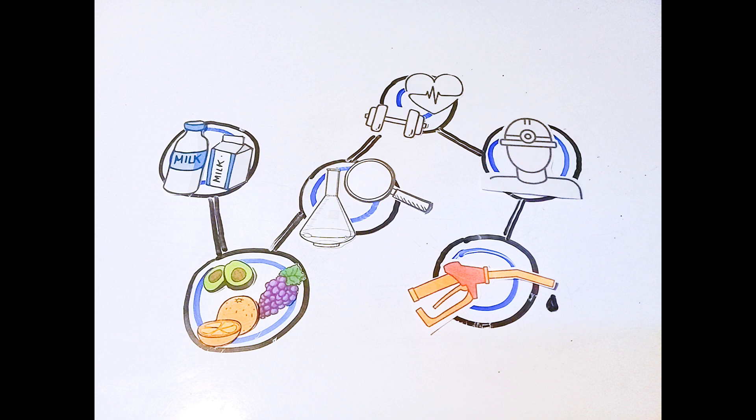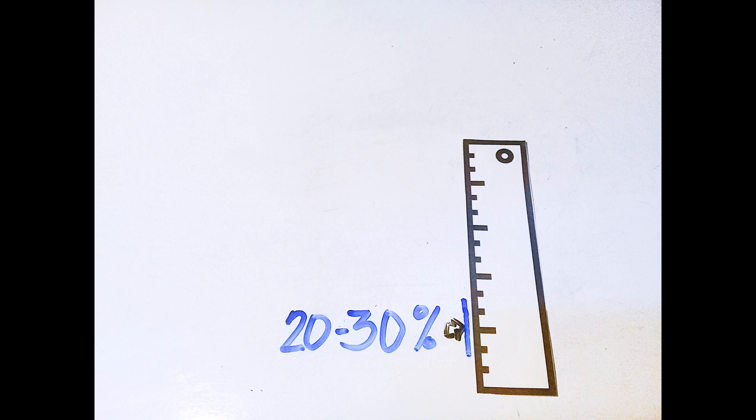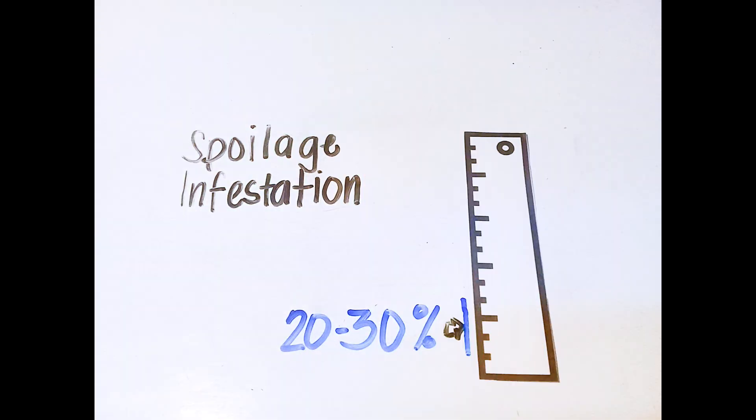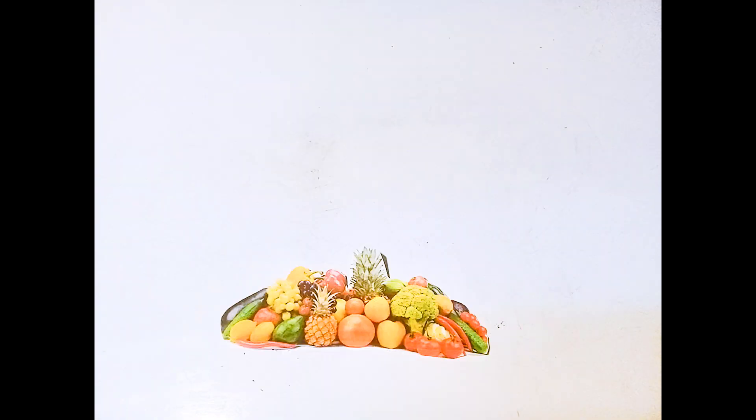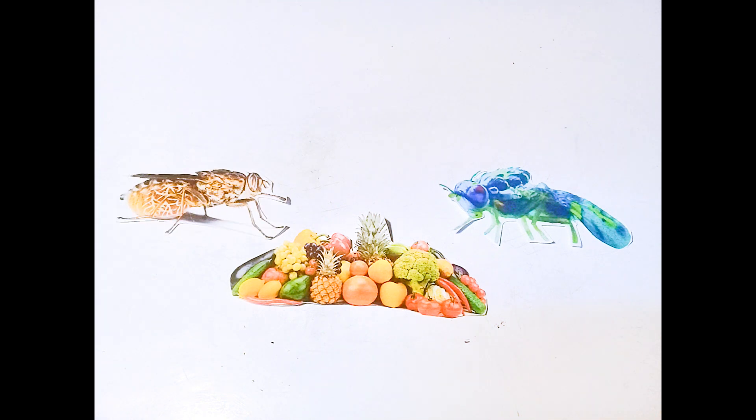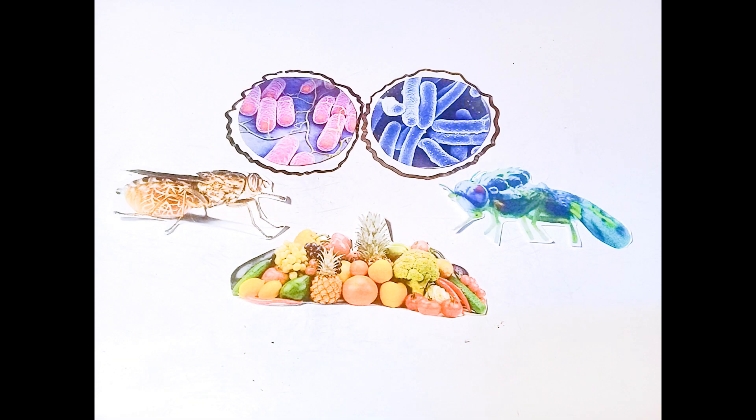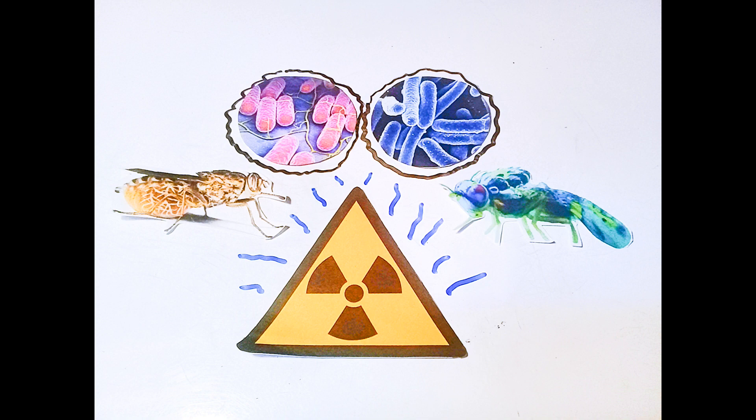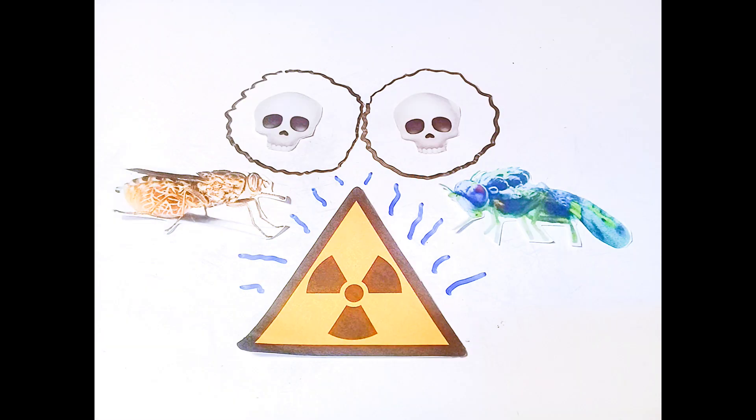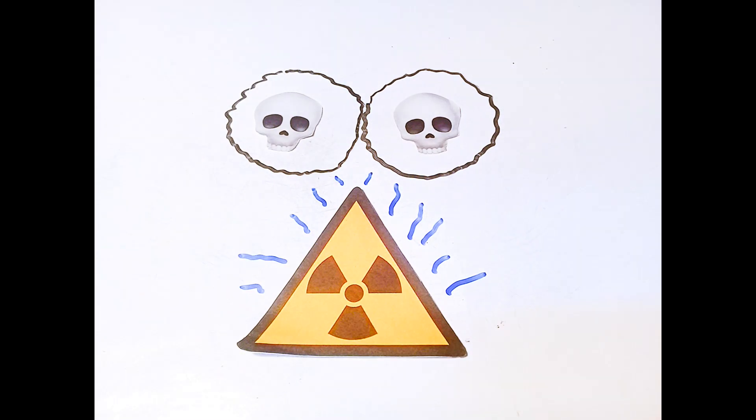With as much as 20 to 30 percent of food production being lost to spoilage and infestation by insects such as the Mediterranean fruit fly and tsetse fly, rodents and bacteria like salmonella, nuclear science increases food production and delivers it with minimum spoilage through irradiation techniques.